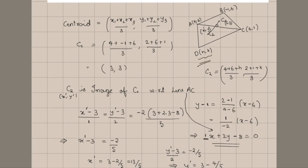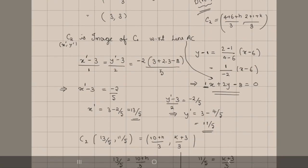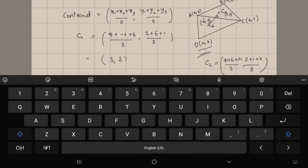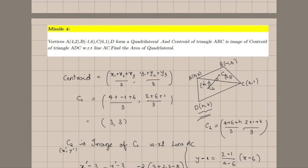Now we know all four vertices. The area of the quadrilateral is simply area of triangle ABC plus area of triangle ADC. Since we know all three vertices for each triangle, we can use the standard triangle area formula. Please try it out.